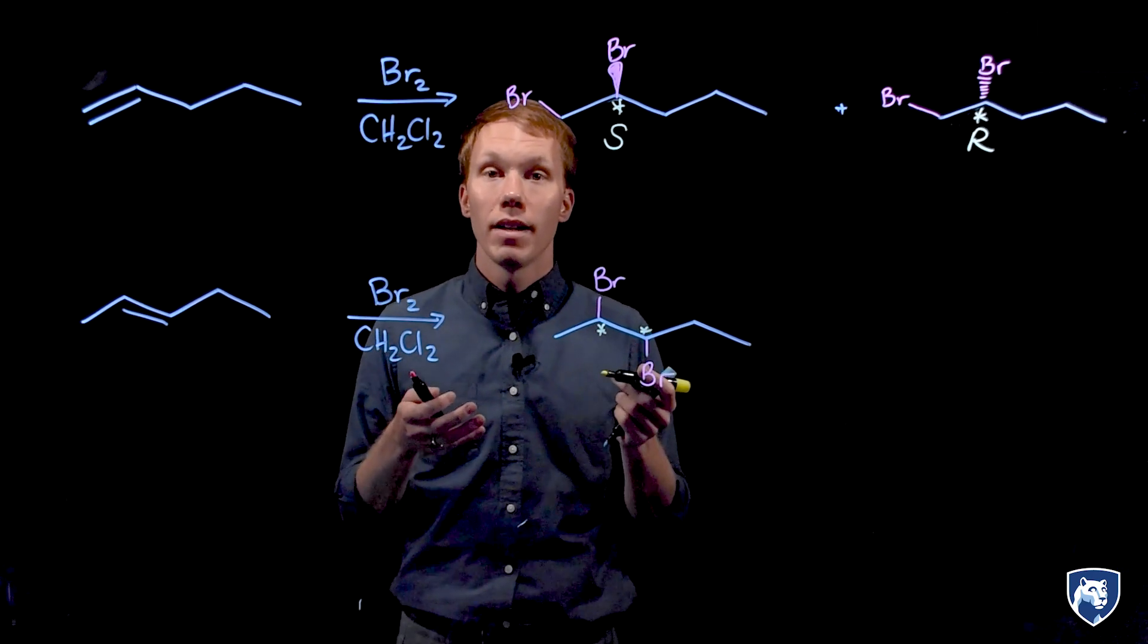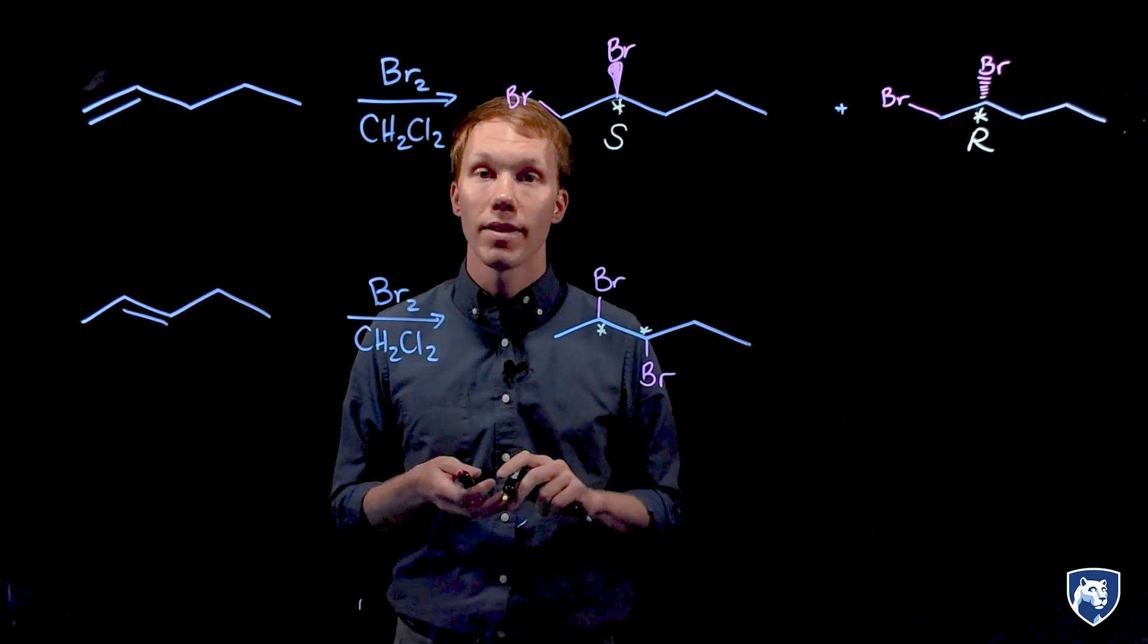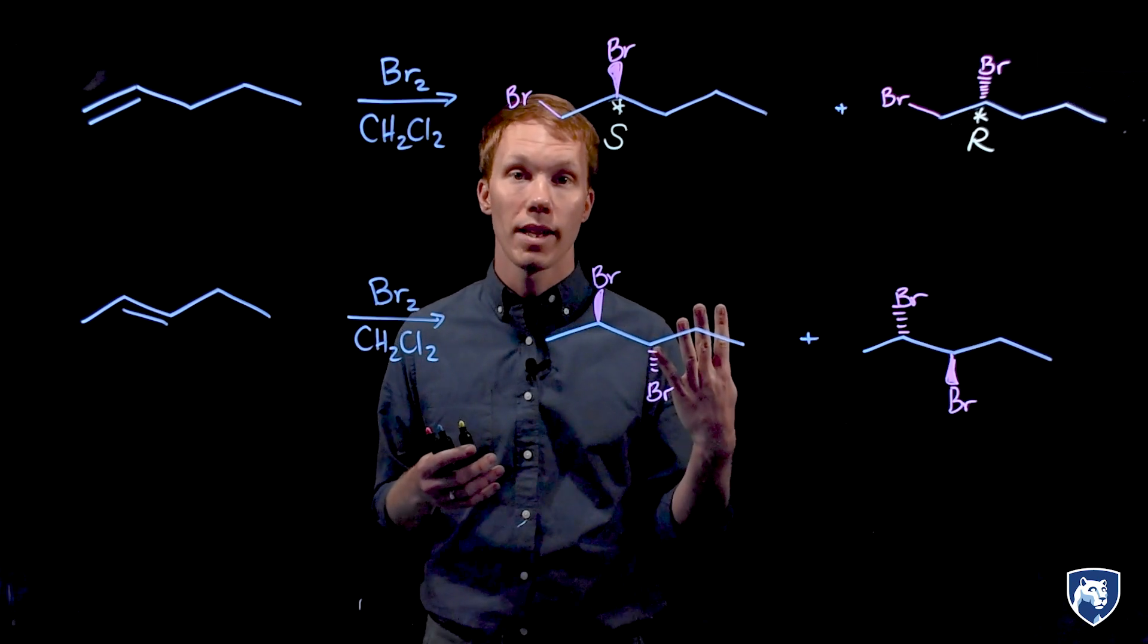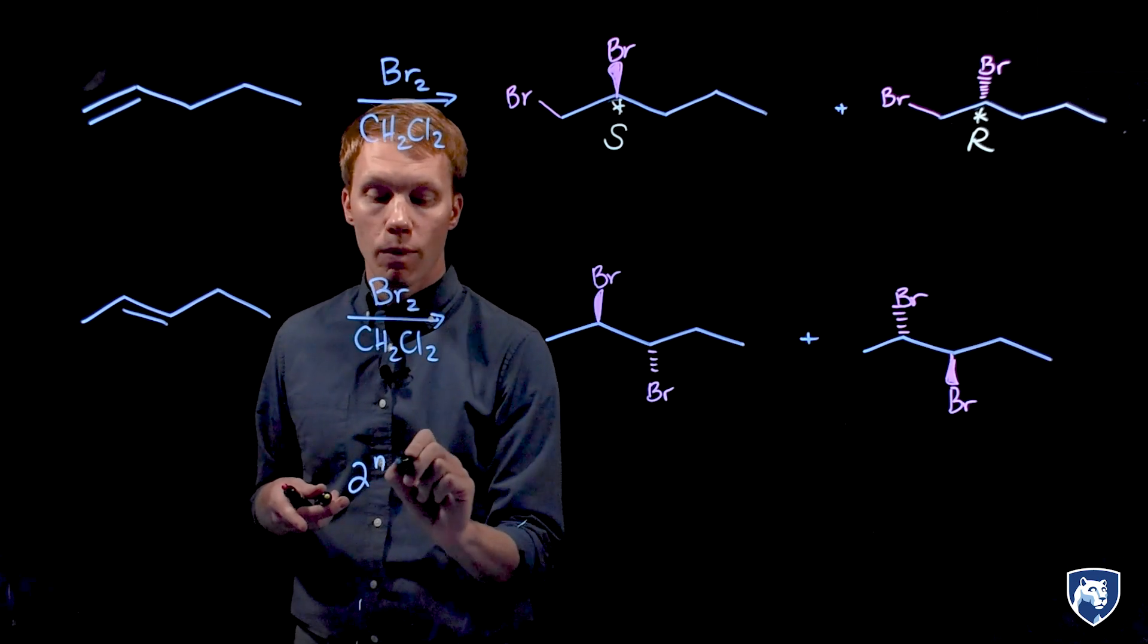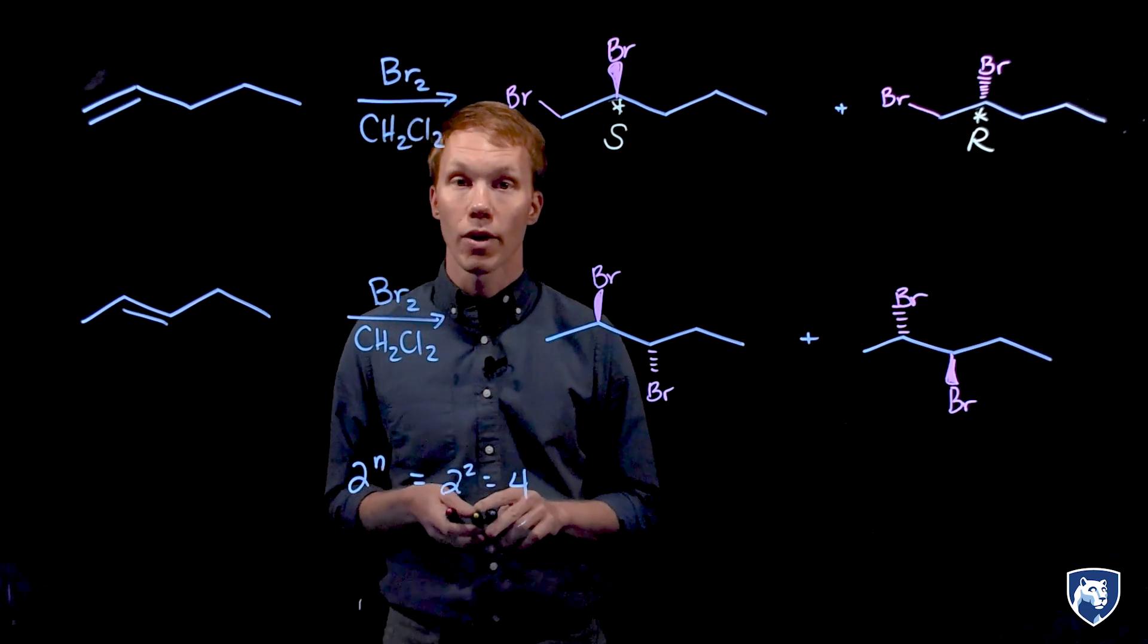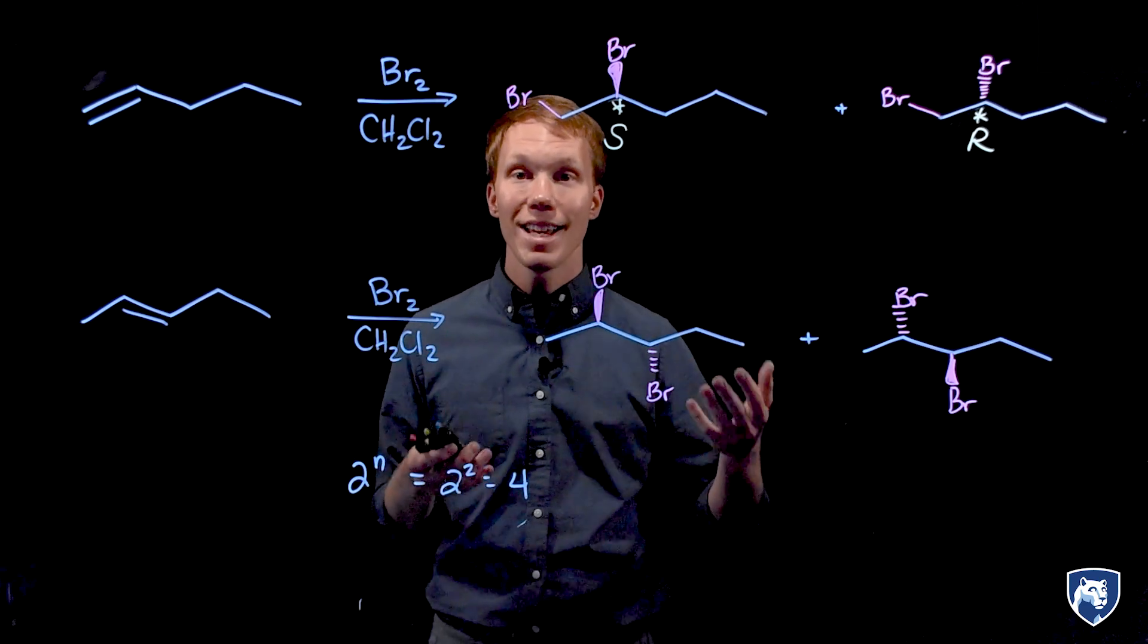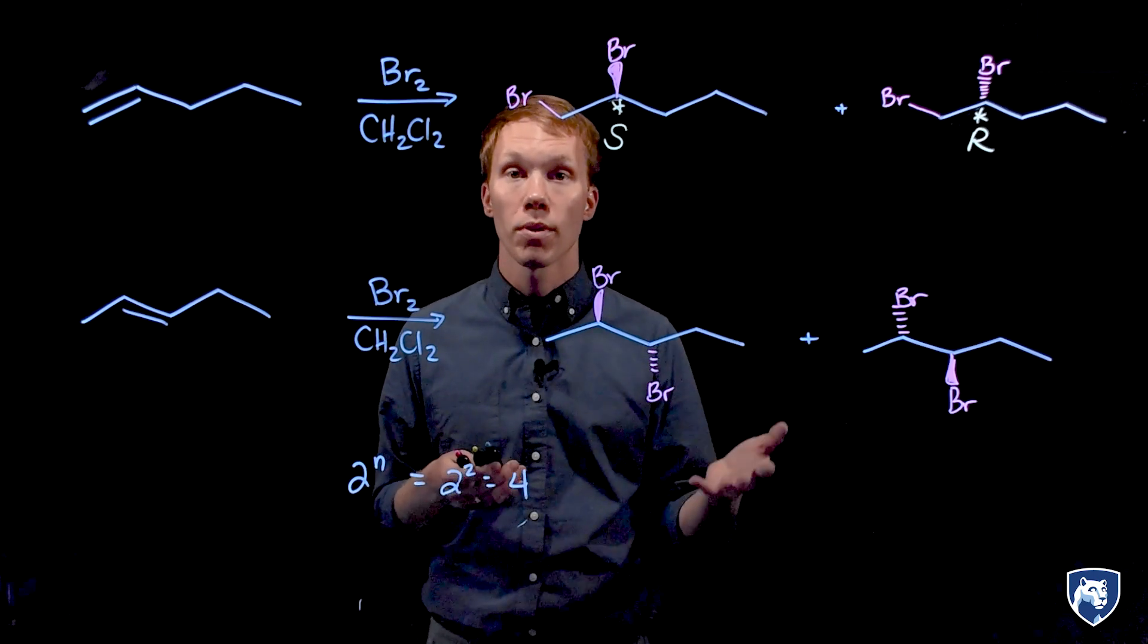How many stereoisomers are possible for a compound that has two chiral centers? A compound having two chiral centers would have up to four stereoisomers in that family. We can do the calculation of two to the n where n is the number of chiral centers, two to the two is equal to four possible stereoisomers. This reaction, though, produces just two of four.